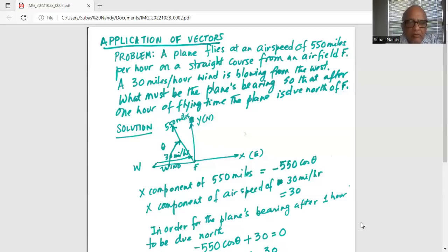So x component at 550 miles per hour is 550 cosine of theta and x component of an airspeed of 30 miles per hour is 30.